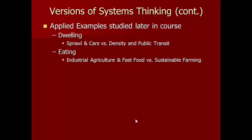Later in the course we're going to examine some specific systems where we can see how human psychology influences and shapes those systems, and how those systems shape human psychology. We'll look at suburban sprawl, cars, and how the density of cities affects the kind of transit systems we can have — basically looking at the concept of dwelling, how we live inside structures in space. We'll also look at eating and industrial agriculture, fast food versus different models of sustainable farming.